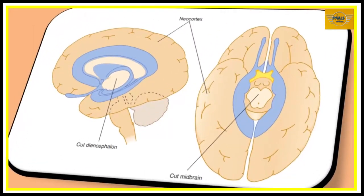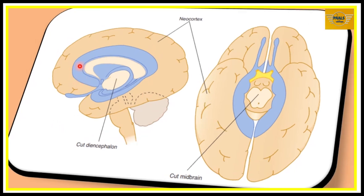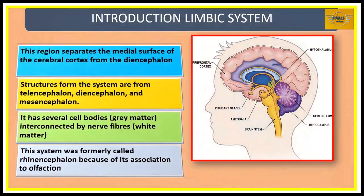Looking at our diagrams, this is a sagittal section viewed from the medial aspect. The blue colored areas are the components that make up the limbic system. This is a section of the midbrain, and we see these structures forming a ring around the upper part of the midbrain and the diencephalon. This term was first presented by a man called Broca. This region separates the medial surface of the cerebral cortex from the diencephalon.